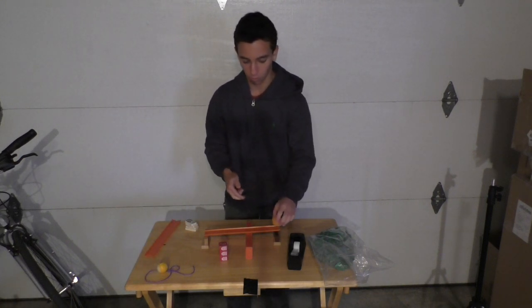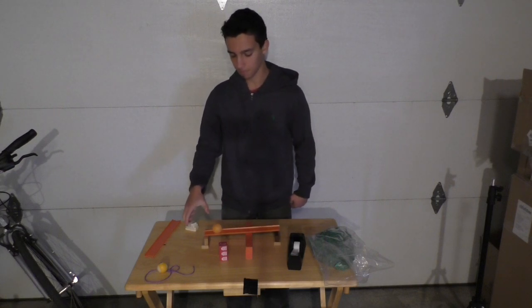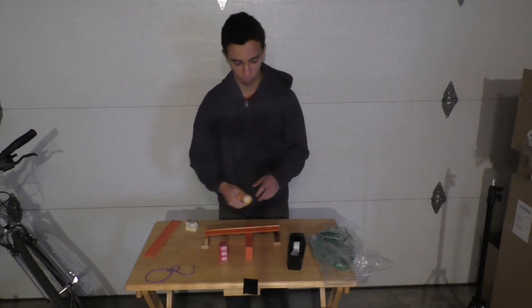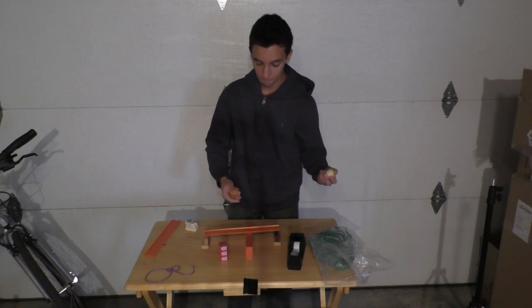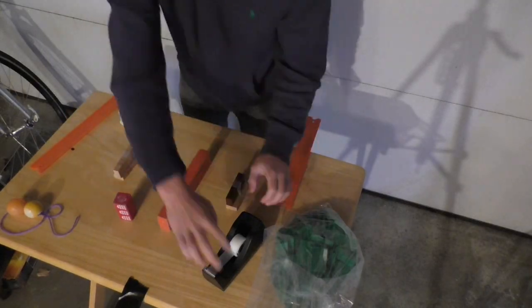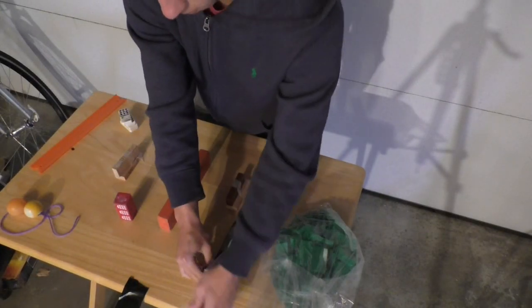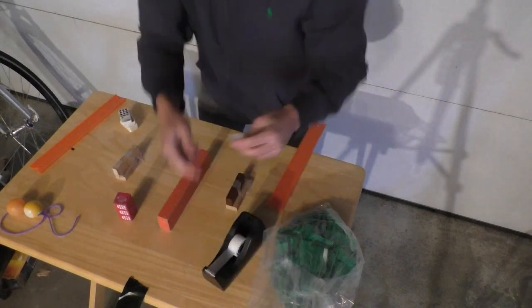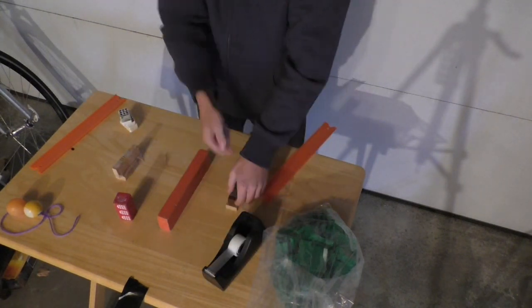So now we've basically provided the layout for our trick. A ping-pong ball will roll right here, and a billiard ball will fall on it and roll the other way. Now we need to provide a way for the trick to work, and in order to do that we need to tape everything down. So first we're going to start by taping down the supports.